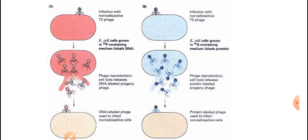After Hershey and Chase, Fraenkel-Conrat and Singer in 1957 proved that RNA is the genetic material in TMV (Tobacco Mosaic Virus). To summarize: Griffith gave the transformation principle in 1928; Avery, MacLeod, and McCarty in 1944 provided evidence that DNA is the genetic material but could not prove it 100%; Hershey and Chase gave the final conclusive proof; and Fraenkel-Conrat and Singer in 1957 proved RNA as genetic material in TMV.